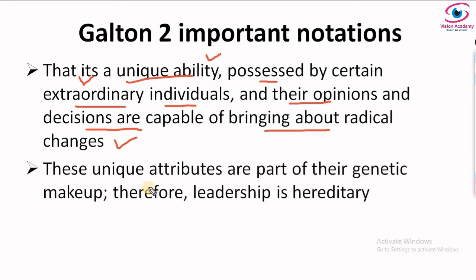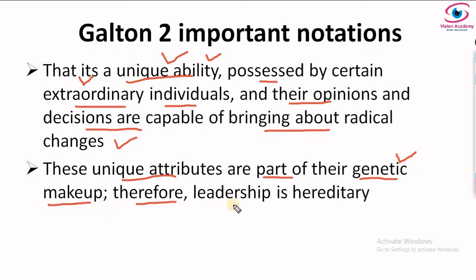The second notation is that these unique attributes — the unique ability mentioned — are part of their genetic makeup. According to Galton, these unique characteristics are part of their genetic makeup, which means this leadership is hereditary. That is why this is called trait theory — trait theory based on genius, trait theory based on heredity. This is the very important notation of Galton.